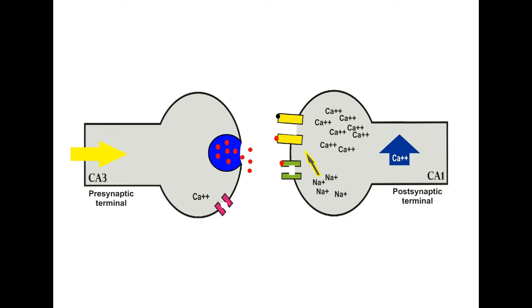NMDA receptors are known as coincidence detectors, because for the activation of NMDA receptor, both presynaptic activity as well as postsynaptic activity is required. The removal of magnesium ion through this process is known as electrostatic repulsion.